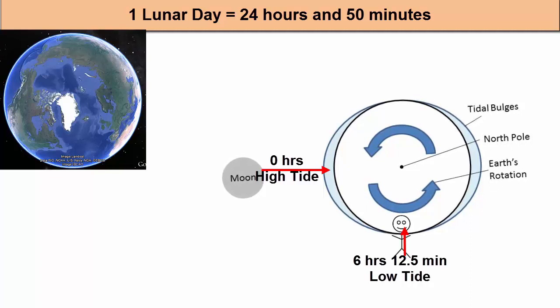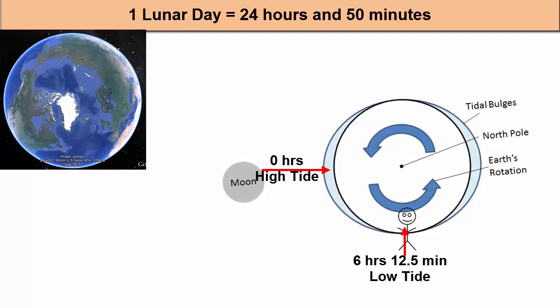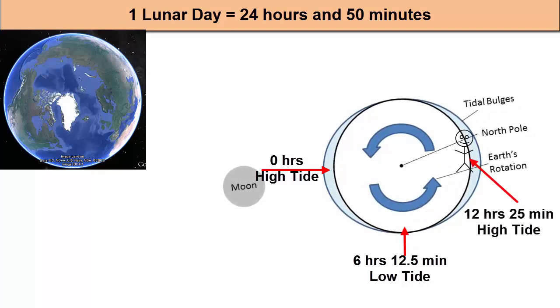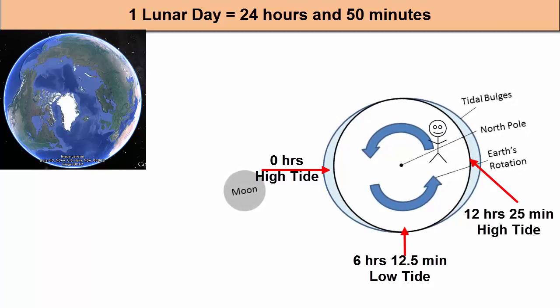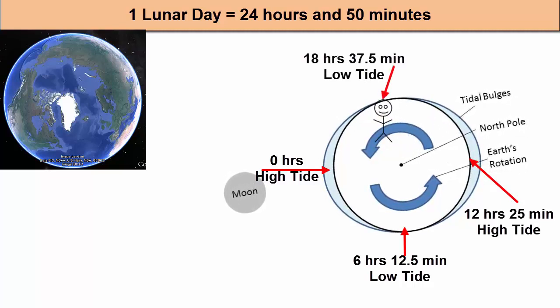Six hours and 12 and a half minutes later, that figure has rotated out of the high tide. Ebb current has removed water from the land and low tide has arrived. Then flood current starts as the figure heads into another high tide at 12 hours and 25 minutes.